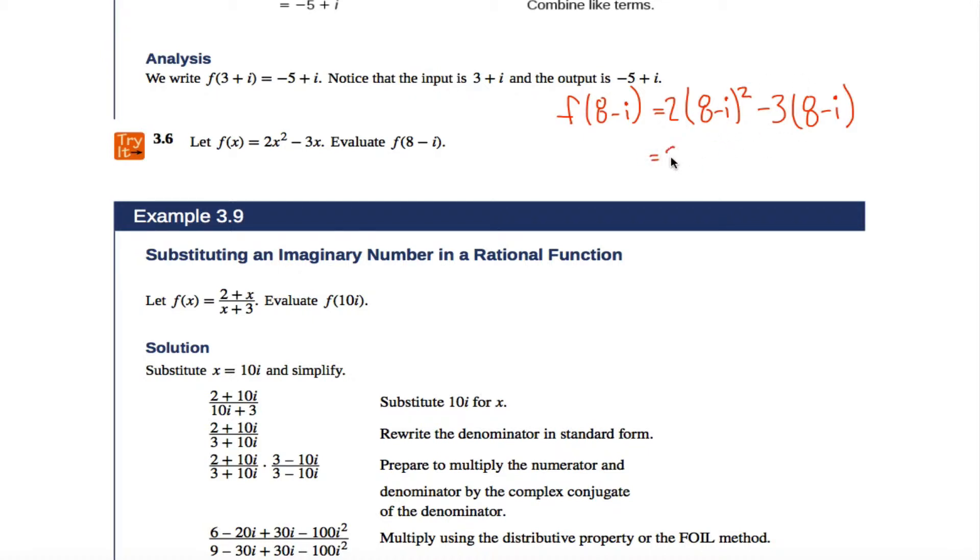So let's do that. To simplify this answer, be careful with your order of operations. (8 - i)², I want to square it first and then multiply by 2. How do you square 8 - i? Oh, is that just 64 plus i² maybe? No.